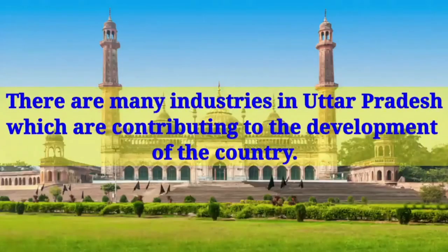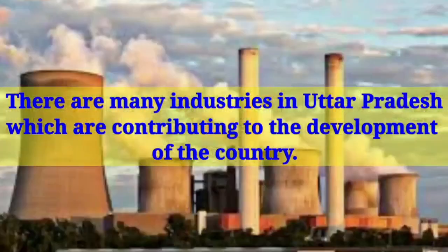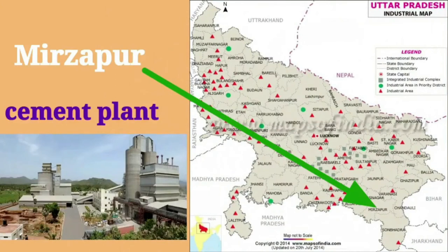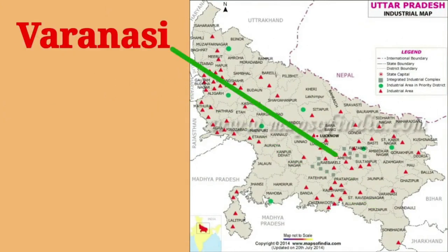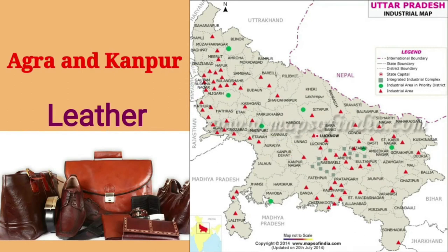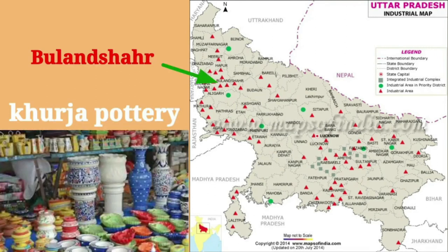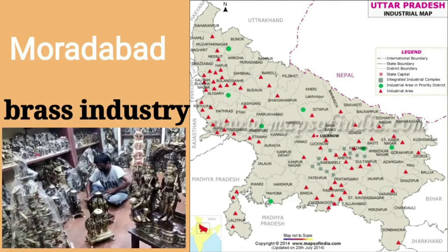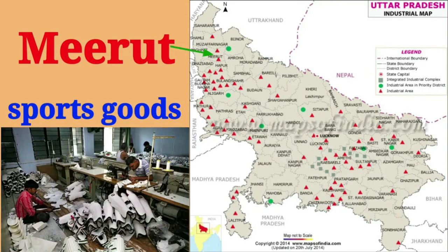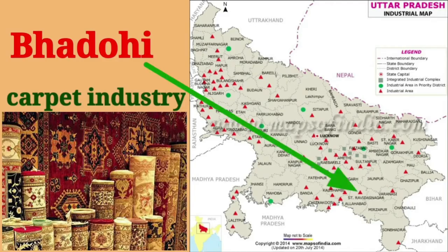There are many industries in Uttar Pradesh contributing to the development of the country. For example, cement plants of Mirzapur; Varanasi is famous for its embroidered textiles and handloom; Agra and Kanpur are major production centres for leather; Bulandsheher is popular for Khurja pottery; Muradabad is popular globally for its brass work; Meerut is famous for its sports goods; and Bhadoi is famous for its carpet industry.